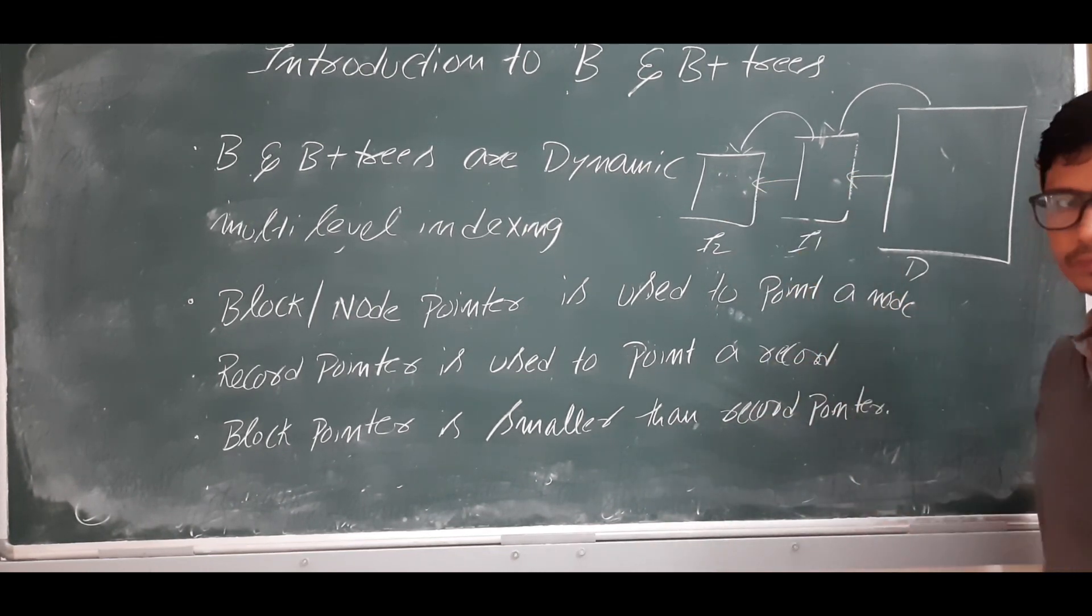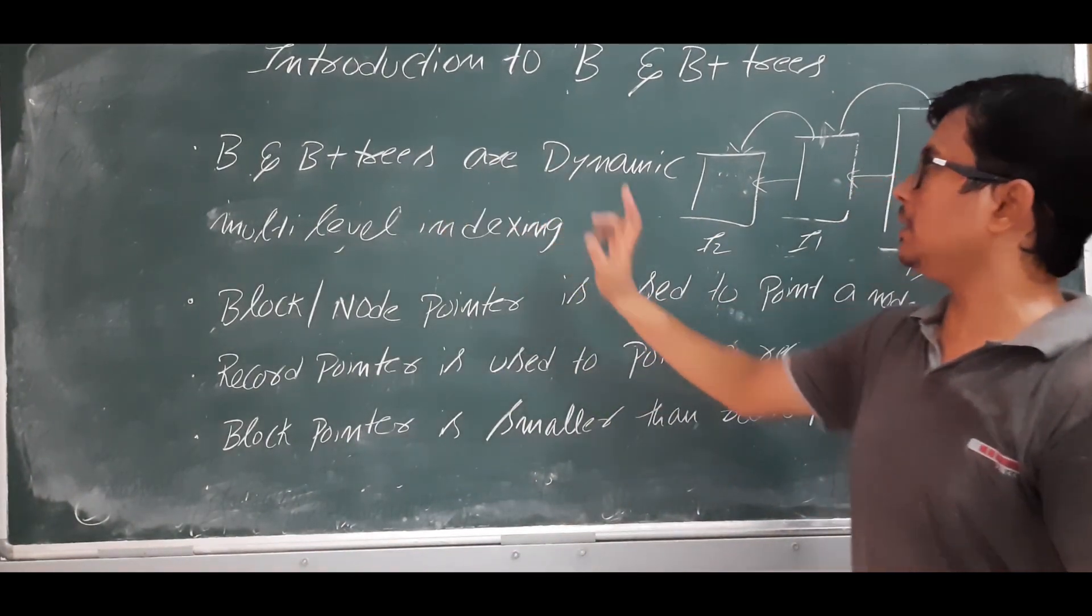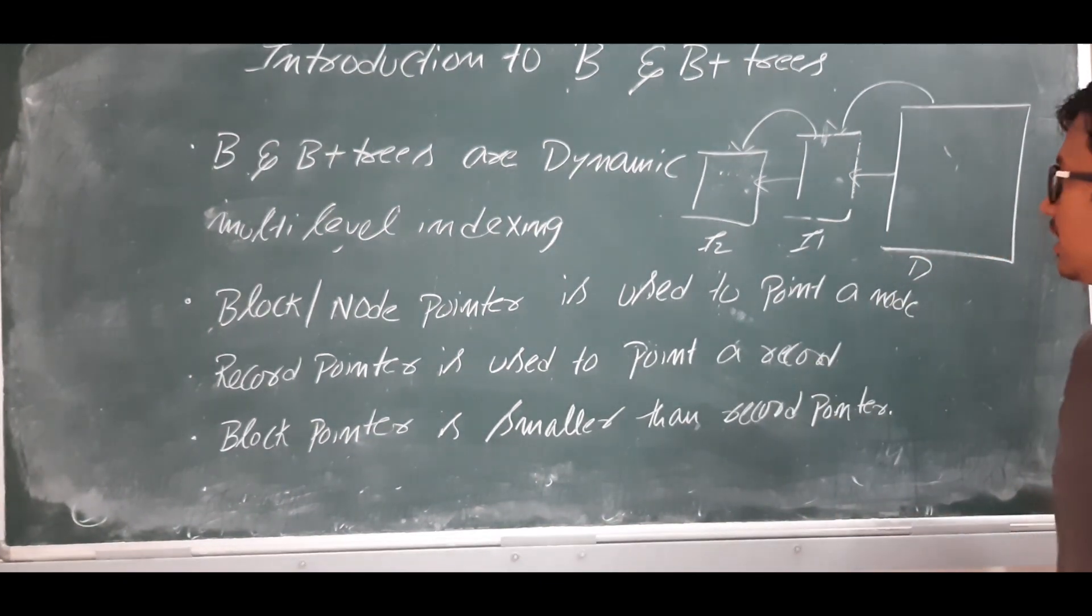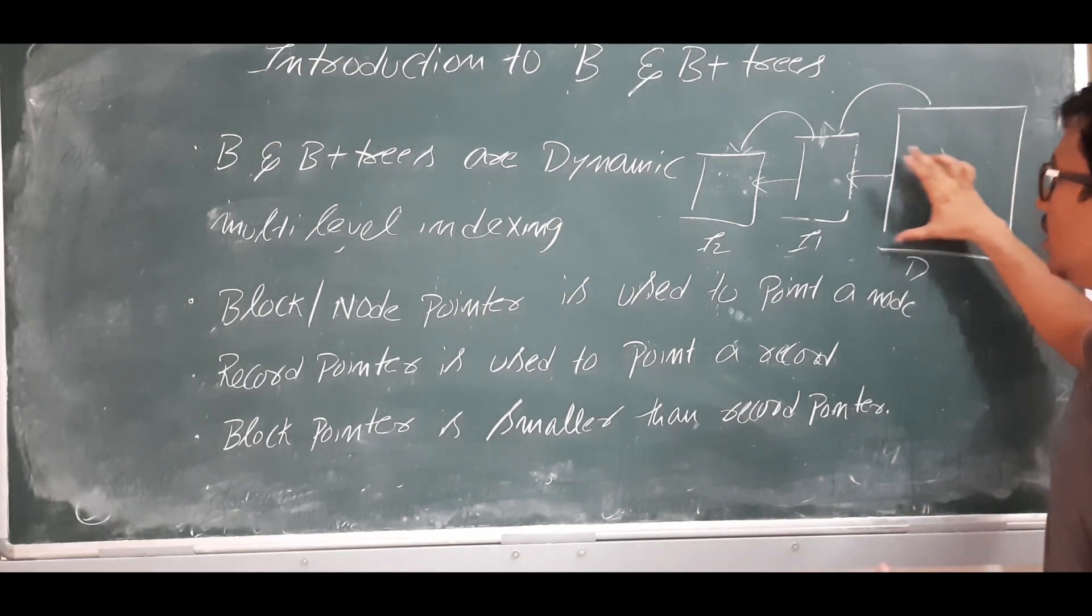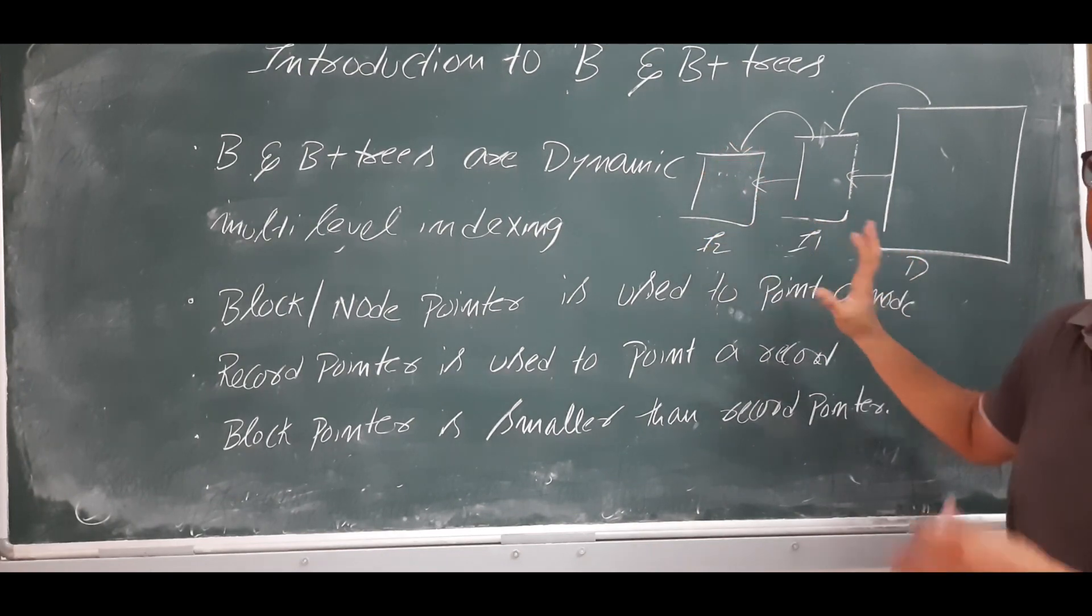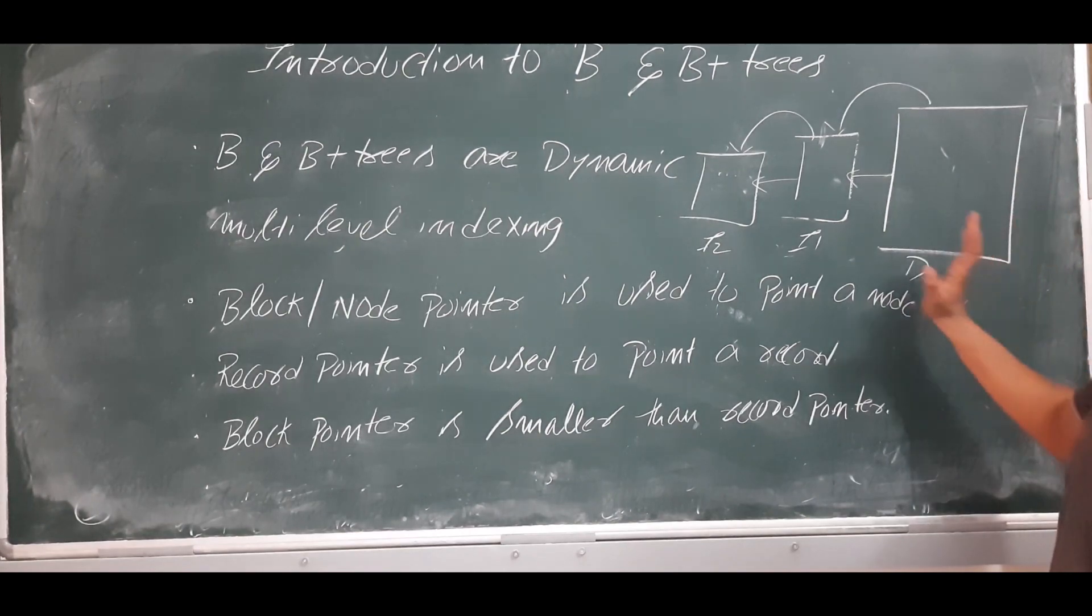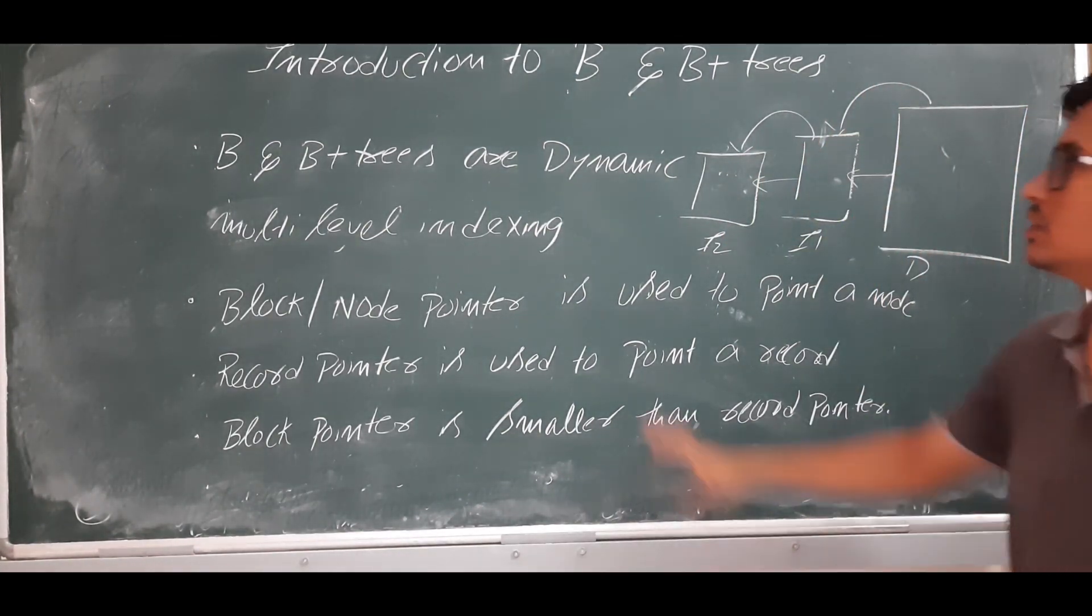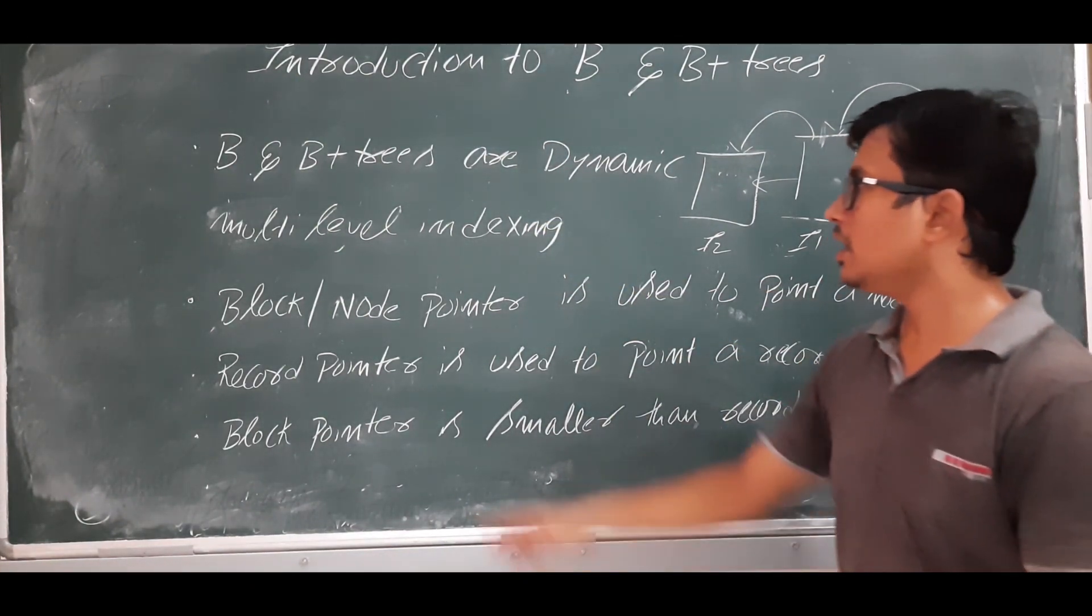B trees and B+ trees are dynamic level multi-level indexing. What is meant by dynamic level multi-level indexing? If I increase or decrease the number of records in the data file, it will automatically increase or decrease the number of blocks in index file one and index file two. That's why it is called dynamic multi-level indexing.